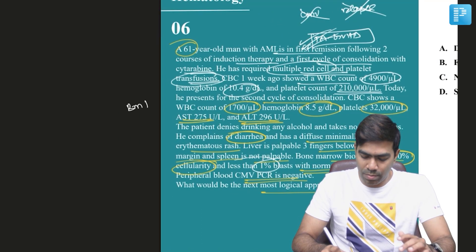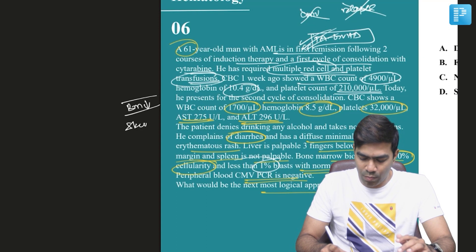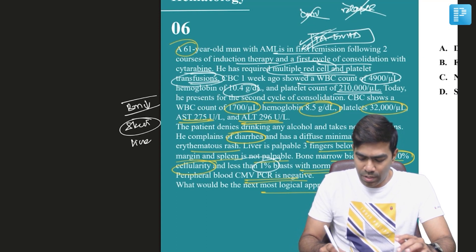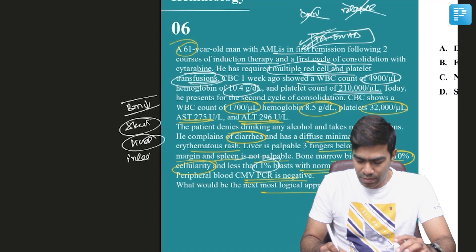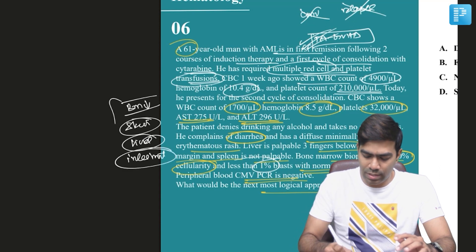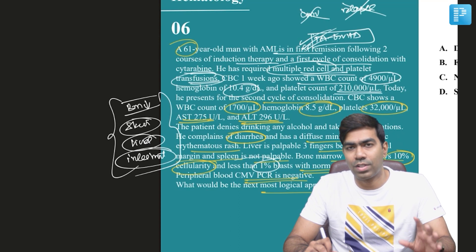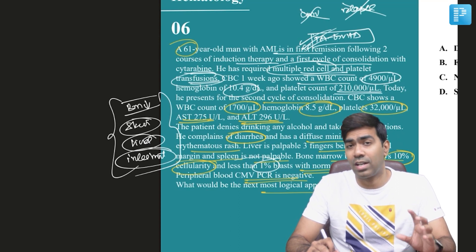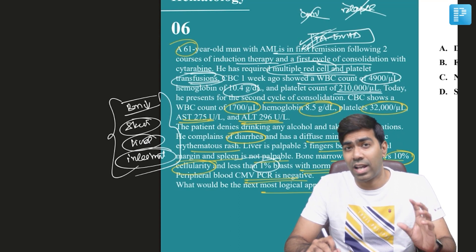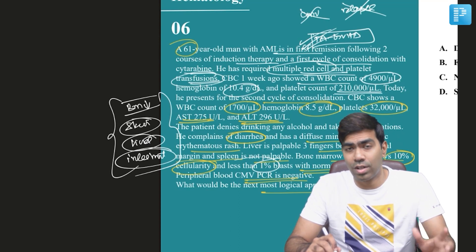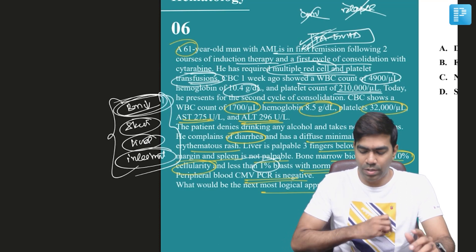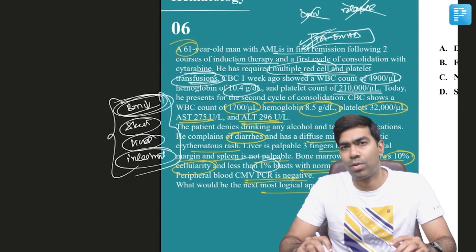This patient clearly has bone marrow suppression, skin involvement, liver involvement, and intestinal involvement in the form of diarrhea. This is a typical picture of a patient having graft-versus-host disease, especially acute GvHD. In a patient with transfusion-associated acute GvHD, bone marrow suppression will be the primary problem.